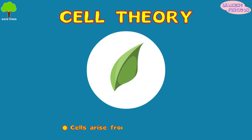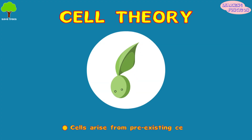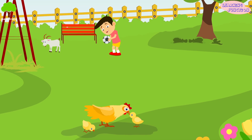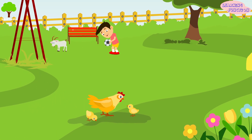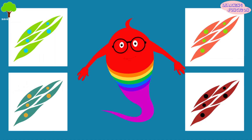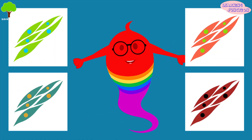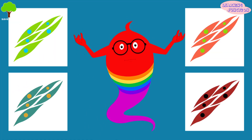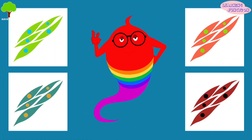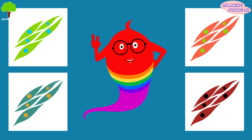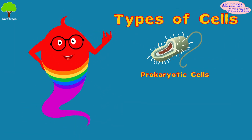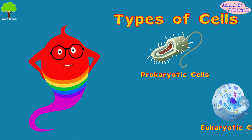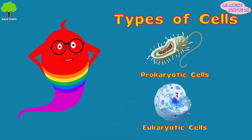Cells arise from pre-existing cells. All the cells vary in terms of shape, number, and size. Although there are lots of different kinds of cells, they're often divided into two main types: prokaryotic and eukaryotic.